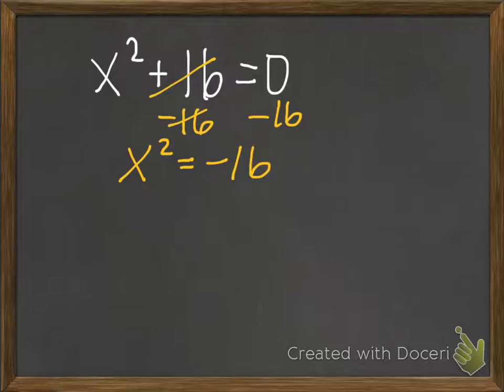But take a look at this situation. Can anything squared equal a negative number? No, it cannot. So if I were to take the square root of both sides, I get x on the left, but I can never take the square root of a negative number.